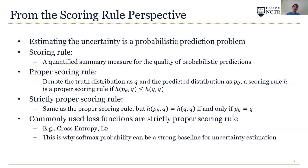Since we hope the uncertainty score u equals the probability the prediction is wrong, this is essentially a probabilistic prediction problem. So this can be analyzed in the framework of scoring rules. A scoring rule is a quantified summary measure for the quality of probabilistic prediction. It's a proper scoring rule if the score is maximized when the predicted probability distribution matches the true distribution. This further becomes a strictly proper scoring rule if the score is maximized if and only if the predicted probability distribution matches the true distribution.